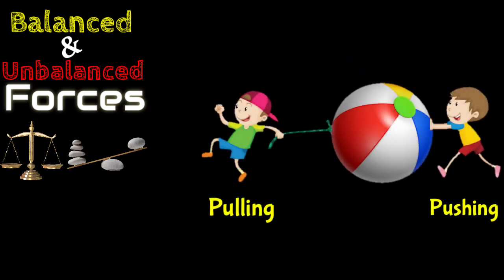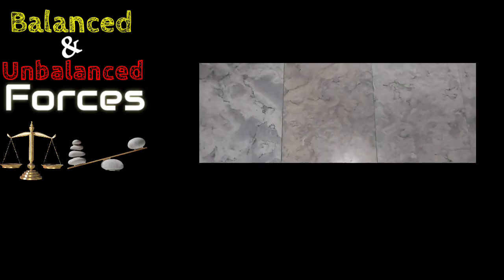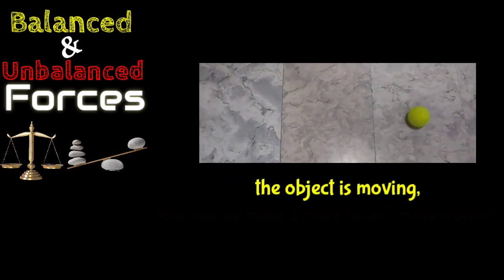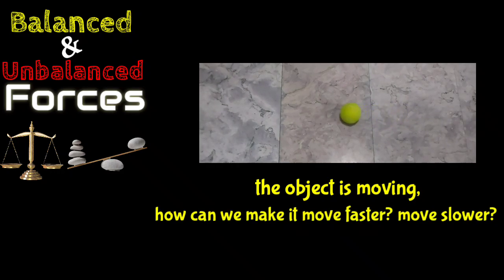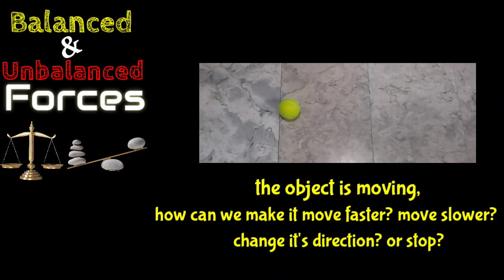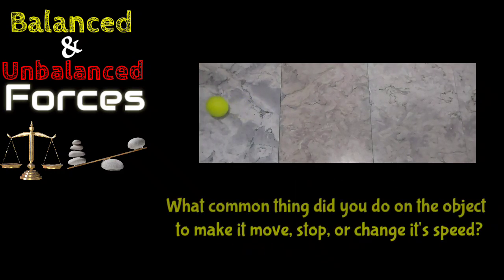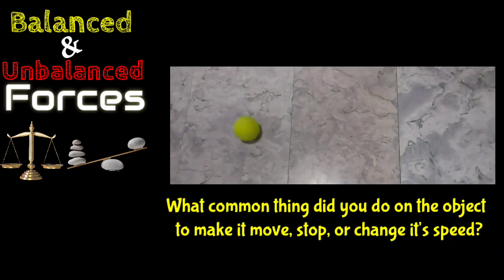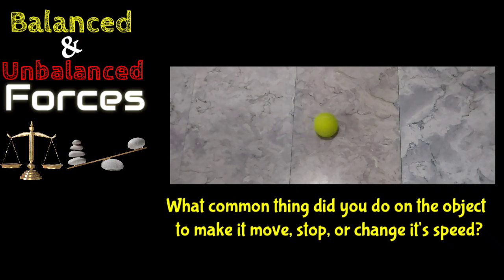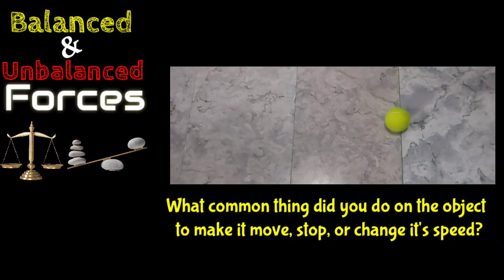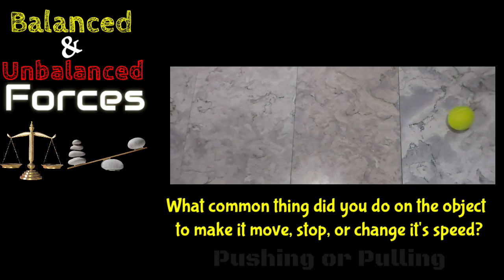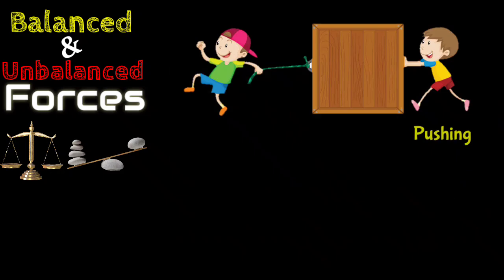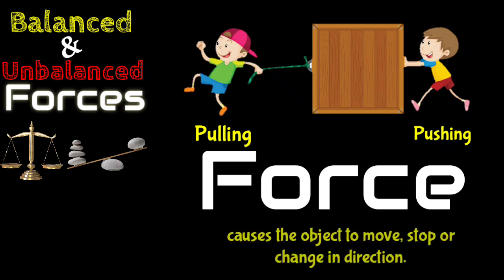Now, look at this next illustration. As you can see, the object is moving. How can we make it move faster, move slower, change its direction, or stop? What common thing did you do to the object to make it stop or change its speed? That's right! The object can be made to move, stop, or change its speed or direction by pushing or pulling.